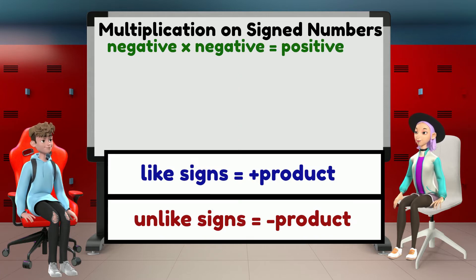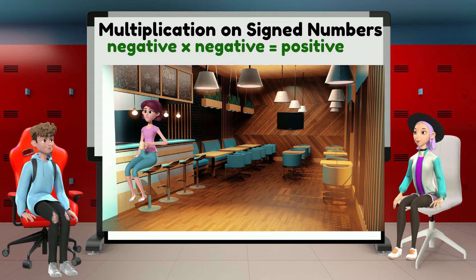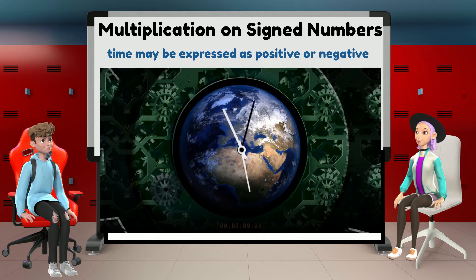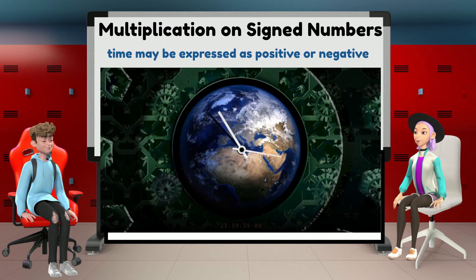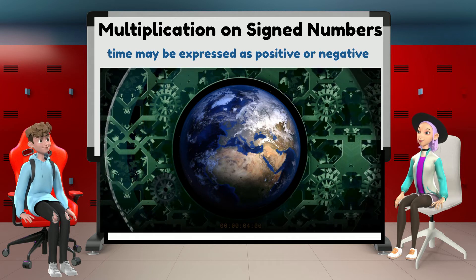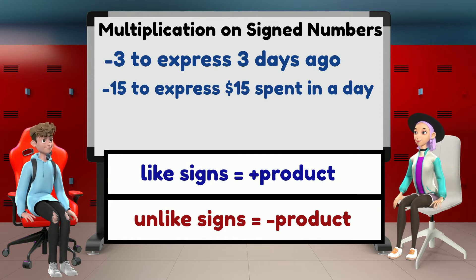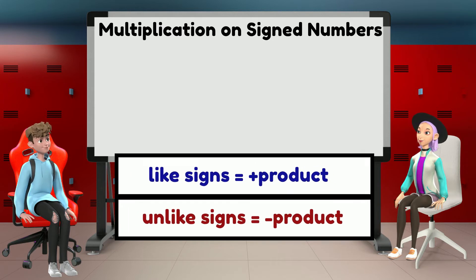How about multiplying two negative numbers? Based on the rules, two negative numbers also give a positive product. In application, let's say I have been spending $15 each day for lunch and today I have no money left — meaning I have $0 now. How much money did I have three days ago? Time can also be expressed as negative or positive: an hour ago is negative 1, while 5 hours from now is positive 5. So three days ago is negative 3, and what I spend for lunch each day is negative $15. Expressing it: negative 3 times negative 15 equals 45. This means that on day negative 3, I had $45.